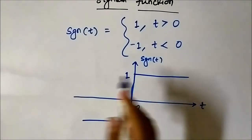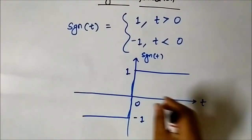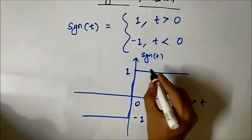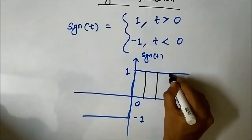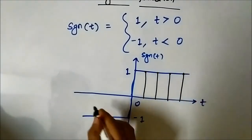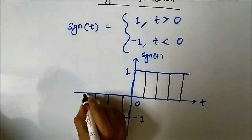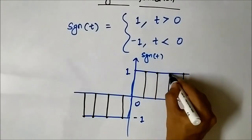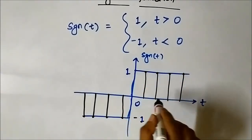This is the continuous time representation of the signum function. Now, for converting into discrete time, we have to take a number of samples of this signal at equidistant points and time intervals by the process of sampling, following the Nyquist sampling theorem. If we take the samples at equidistant points, it will look something like this in the discrete time domain.